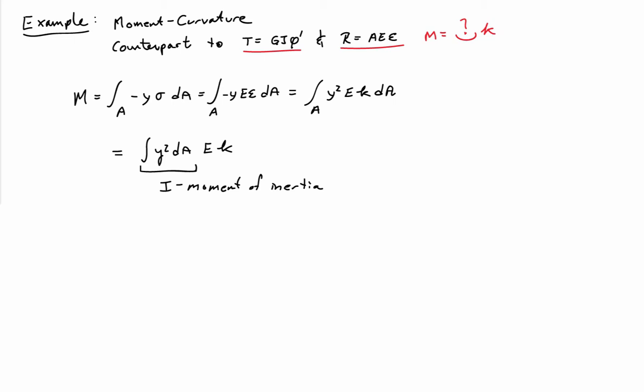This integral of y squared dA, we're going to denote by the symbol I. It's known as the moment of inertia of the cross-section, or the second moment of the area. That then gives us a final relationship that says that the moment is equal to EI times kappa.